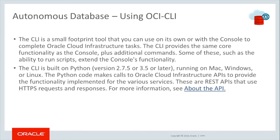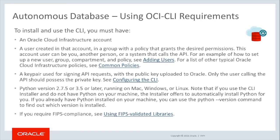The CLI is built in Python version 2.7.5 or 3.5 or later, running on Mac, Windows, or Linux. The Python code makes calls to the Oracle Cloud Infrastructure APIs to provide the functionality — these are REST APIs that use HTTPS requests and responses. To install and use the CLI, you must have an Oracle Cloud Infrastructure account, a user created in that account, and a group with a policy that grants the desired permissions.